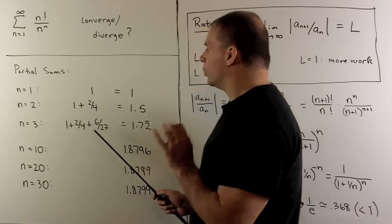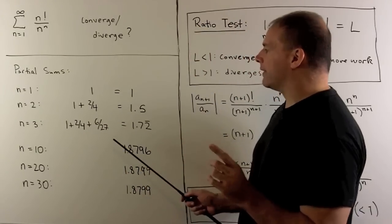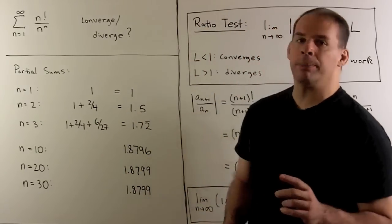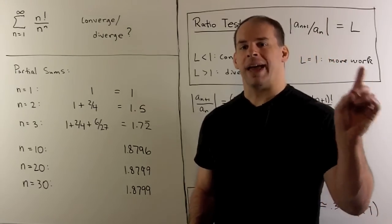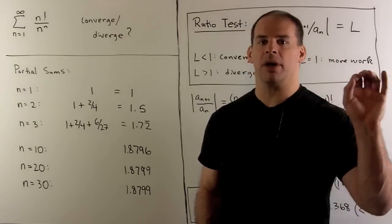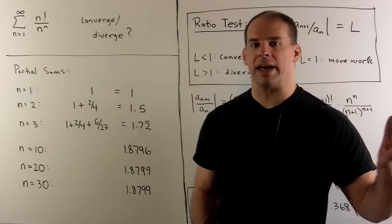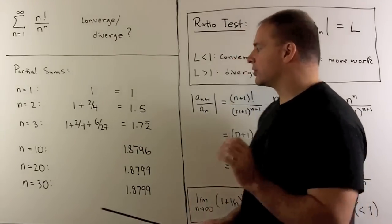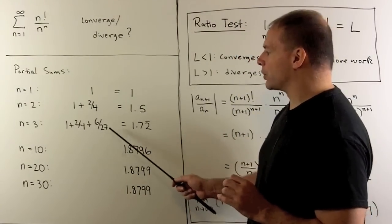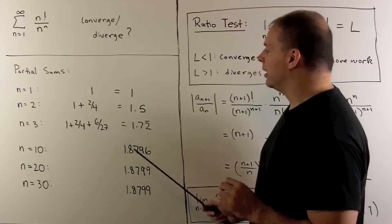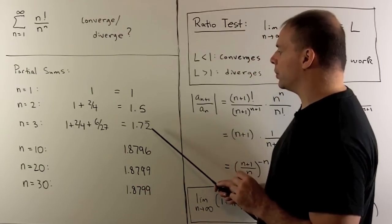For the third one, we add on 3 factorial divided by 3 to the third power. Recall, n factorial is just n times n minus 1 times n minus 2, all the way down to 1. So 3 factorial is going to be equal to 6 over 27. We add, I get 1.72, and that repeats.